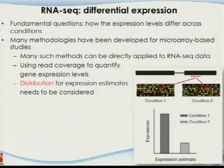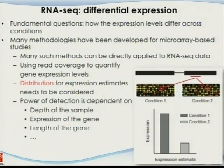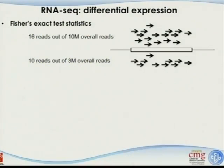The distribution for the expression estimates needs to be considered. When doing T-tests, a major assumption is that the data follows a normal distribution. For microarrays, after log transformation the data roughly follows a normal distribution. For RNA sequencing, probably it doesn't. If you know the specific distribution that makes better sense, you can build that into your estimation model. The power of detection for differential expression also depends on the depth of the sample, the expression level of the gene, and the length of the gene — multiple factors are important.